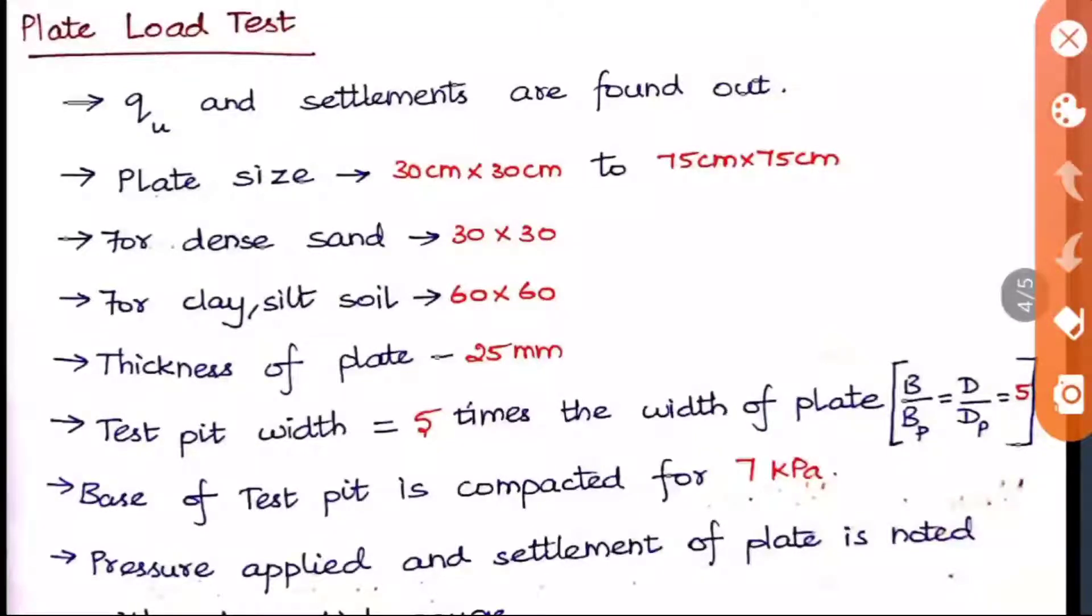How they will do is actually they will fix a plate over the soil and apply the pressure, usually by putting some weight on that. Normally sandbags will be used upon the plates so that the pressure is happening at the plate, and with respect to that pressure, what settlement is happening will also be measured using any gauge fixed there. This is the normal principle happening in the plate load test.